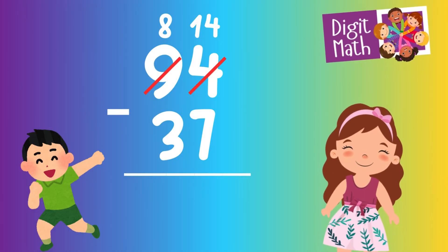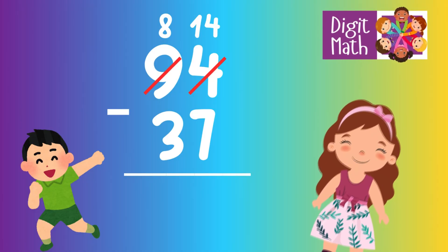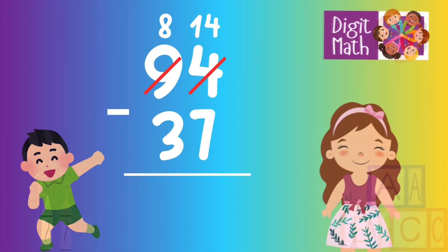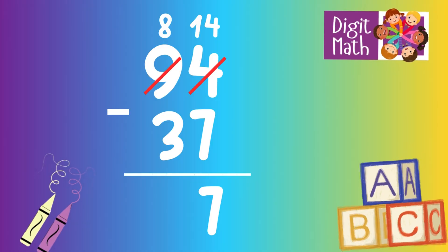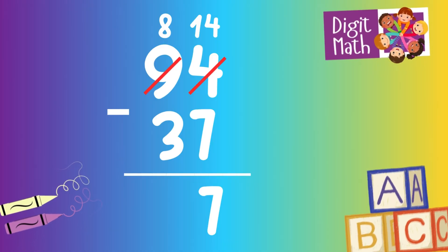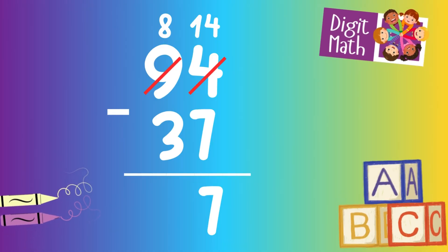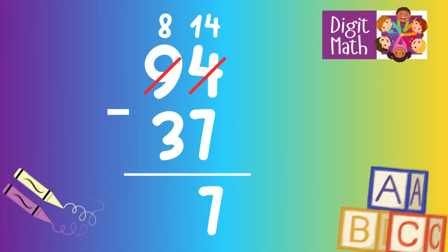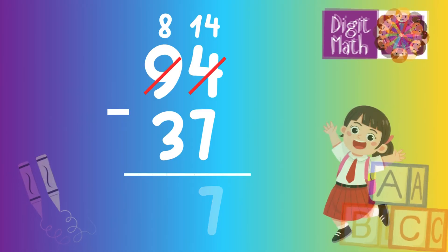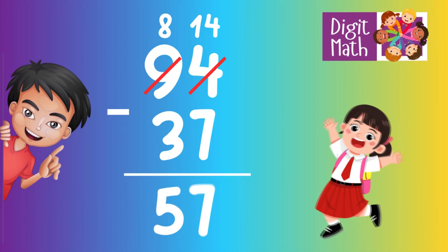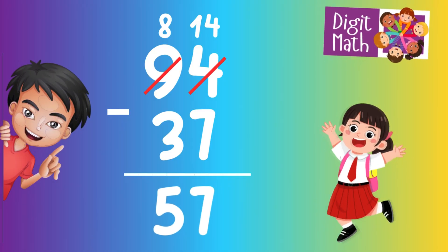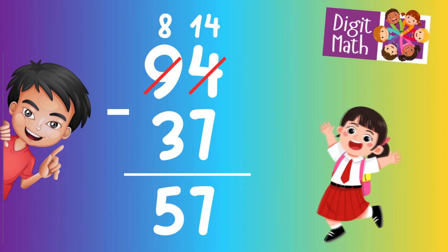Now we have 14 in the Units column. Subtract 7 from 14, which equals 7. In the Tens column, we now have 8. Subtract 3 from 8, which equals 5. So the final result is 94 minus 37 equals 57.